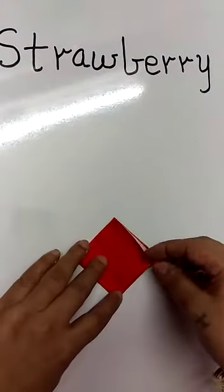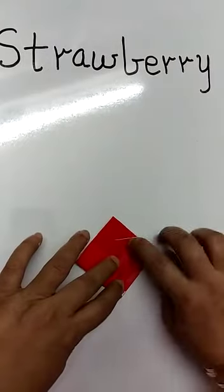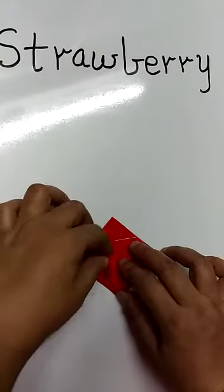You get these folds this way. Now you make a smaller triangle. Press this side. Do the same thing the other side.